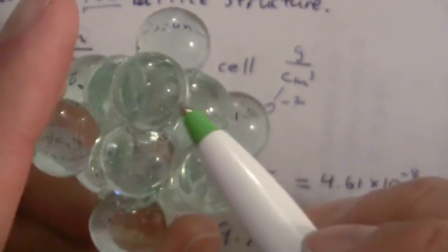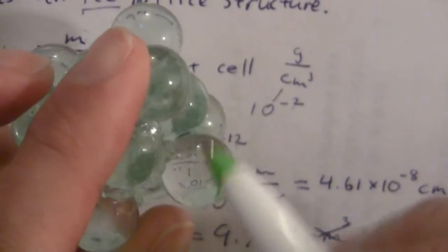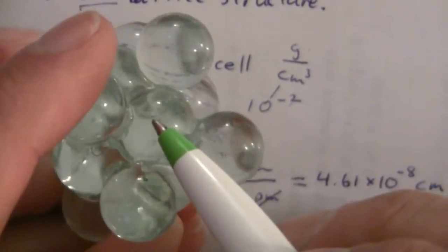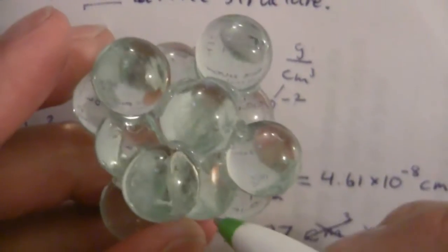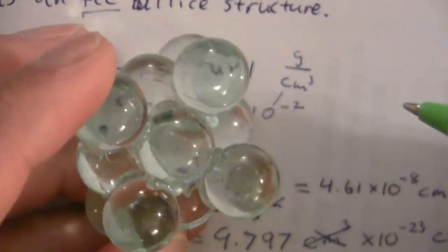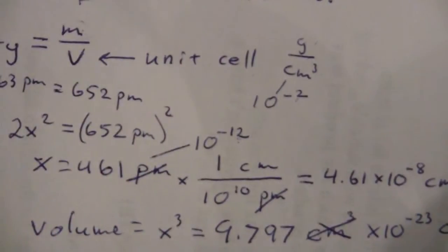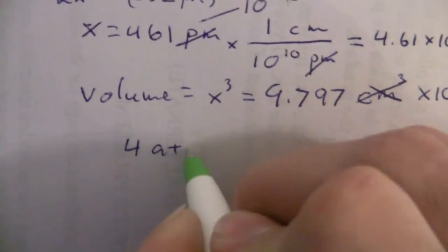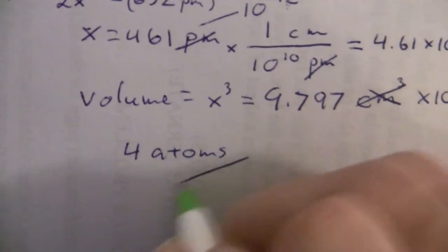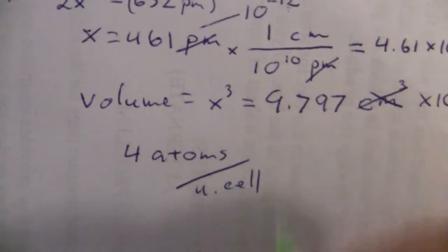We're cutting this in half, so each face will only be half of an atom, and we have six of those. So that's six times a half is three. We add that to the one from the eight corners, and you get four atoms per unit cell.